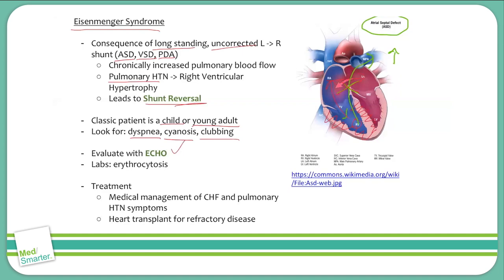These patients are going to be evaluated with an echocardiogram. On their labs, you might see some erythrocytosis. The reason this happens is poor O2 saturation in the blood, but the difference here is that it starts to develop gradually. As Eisenmenger syndrome starts to develop — it's a slow process — the bone marrow will adapt by increasing the production of red blood cells to try to maintain oxygenation of the peripheral tissues.